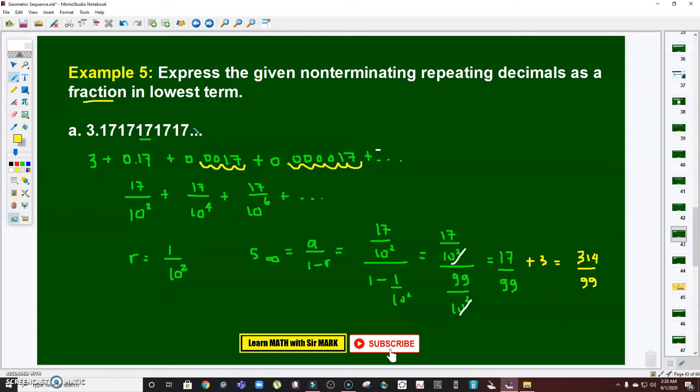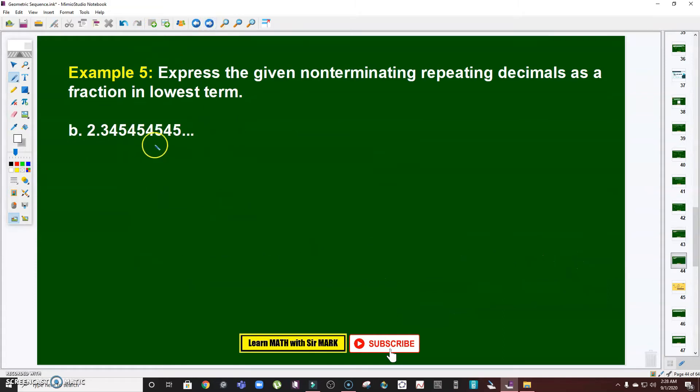That will give us 314 over 99. So this is now the lowest term. If we're going to check it, it's approximately equal to the given, which is 3.1717 and so on. Therefore the answer in this problem is 314 over 99.